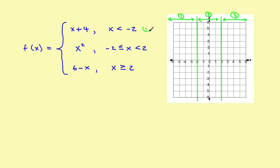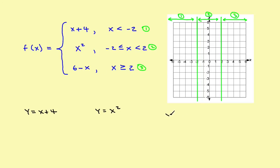When you graph these, my suggestion is to write each piece out as a separate function. In interval 1, it's y equals x plus 4. In interval 2, it's y equals x squared. In interval 3, it's y equals 6 minus x. Then graph each one separately, and erase the part you're not interested in.